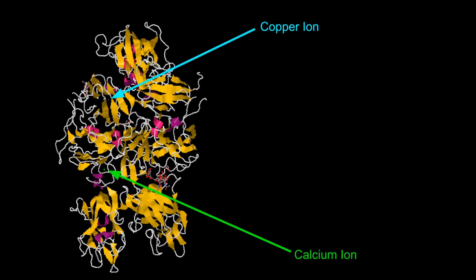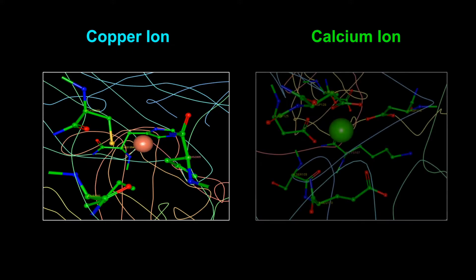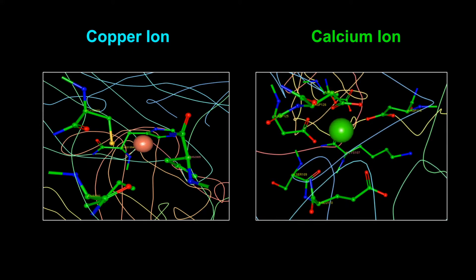Factor VIII contains the metal ions copper and calcium, which noncovalently bridge the A1 and A3 domains. One molecule of copper is present per molecule of Factor VIII, as it enhances the cofactor function of the protein. The copper ion binding site is composed of two histidine residues and a cysteine and an isoleucine residue, while the calcium ion binding site is tightly coordinated by glutamate, aspartate, serine, and lysine residues.